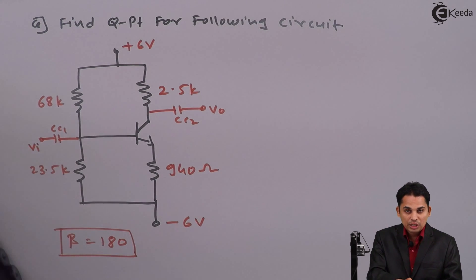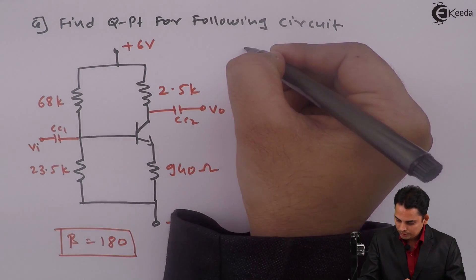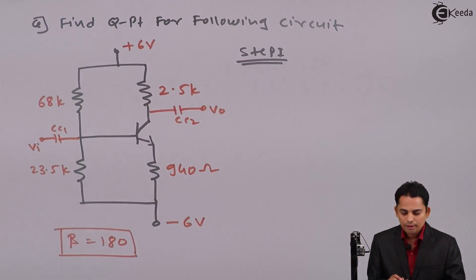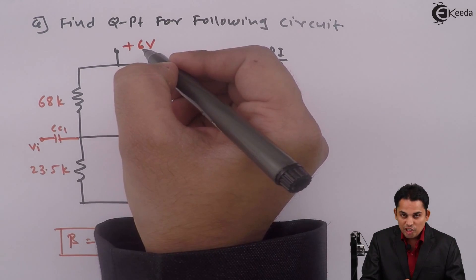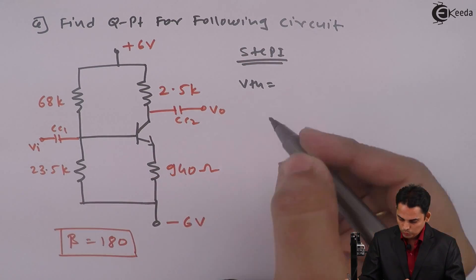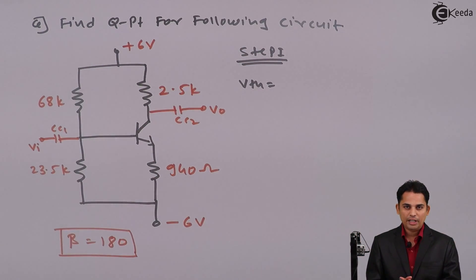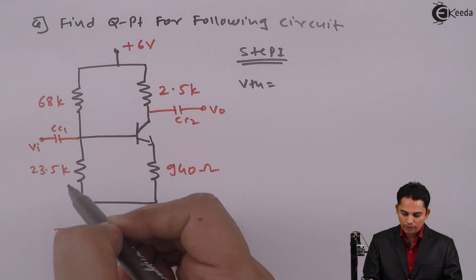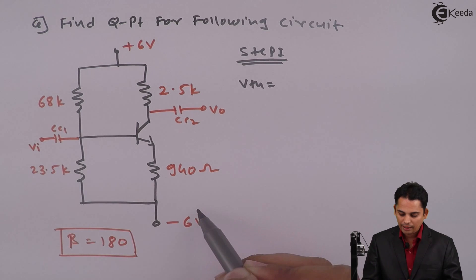But now in the first step in order to get VTH and RTH, equation of VTH will change. Let us see what is change in the equation. So step 1. VTH is given as VCC multiplied by R2. Normally the VTH is given as VCC multiplied by R2 divided by R1 plus R2 when this battery is absent.